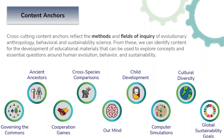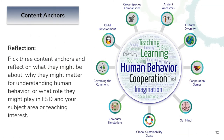You can pause the video here and take a moment to reflect. Pick three content anchors and consider what they might be about, why they might matter for understanding human behavior, and what role they might play in education for sustainable development — especially in your subject area or teaching interests. See what connections emerge in your mind, or discuss with a peer. As you do the readings throughout the course, think about how each content anchor helps organize and grow our understanding of human behavior.